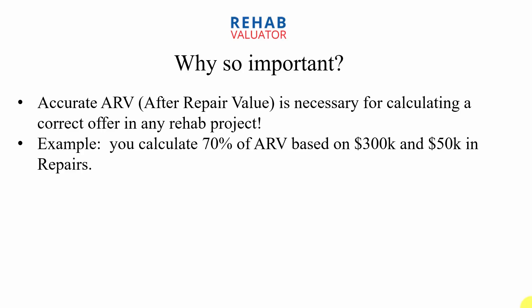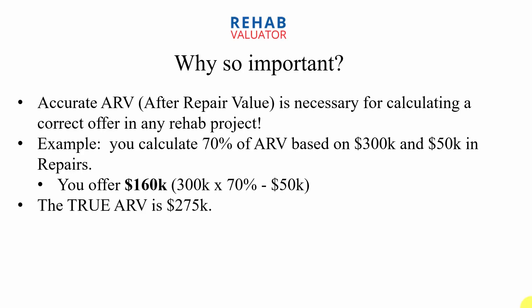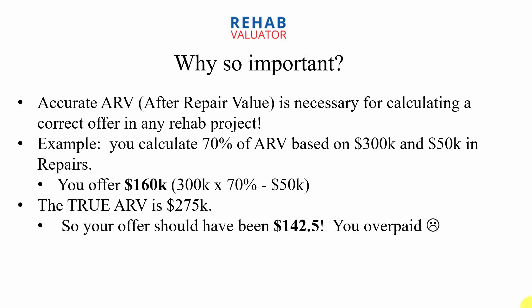Let's assume you're using 70% of after repair value to calculate your offers. You assume the after repair value is $300,000 and the property needs $50,000 in repairs, so you're going to offer $160,000. We're using a very simplistic example — ignoring holding costs, closing costs, financing costs. We're just taking our after repair value of $300,000, multiplying it by 70%, and then subtracting $50,000 in repairs. But the problem is the true after repair value is lower — it's $275,000. So your offer should have been $142,500. That means you overpaid. If you're wholesaling, you may have a hard time selling that contract to another investor, and if you're buying the deal to renovate it yourself, you're going to have a lot less profit margin than you originally thought. Not good.